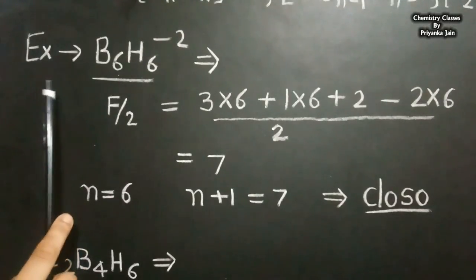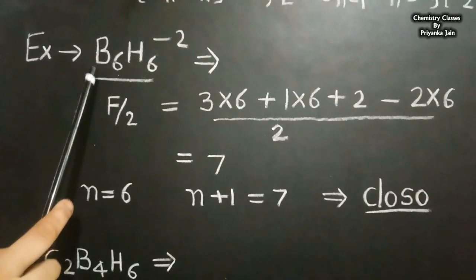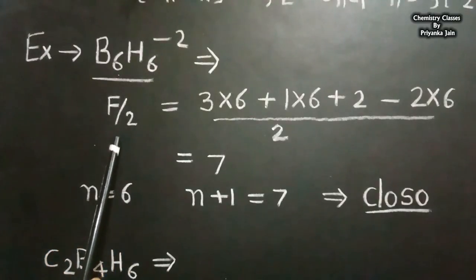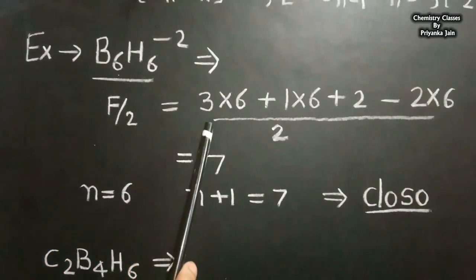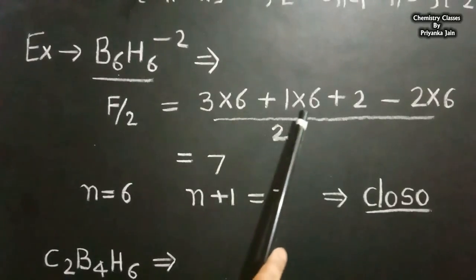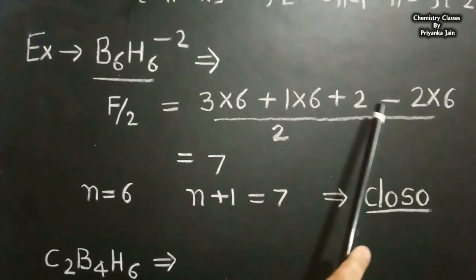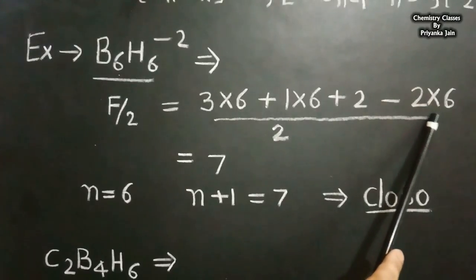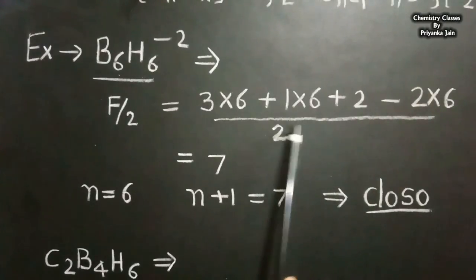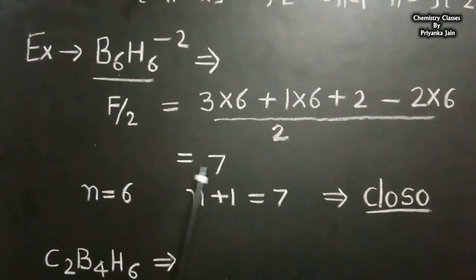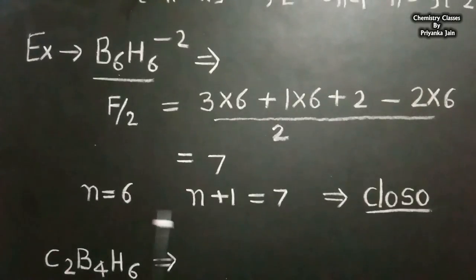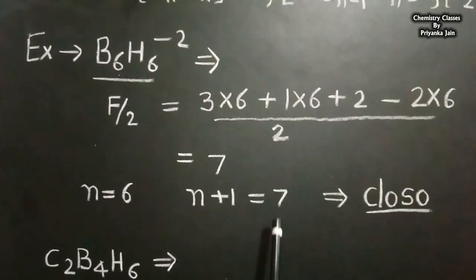For example, to find the framework electrons in B₆H₆²⁻: F/2 = (3×6 + 6×1 + 2 − 2×6) / 2 = (18 + 6 + 2 − 12) / 2 = 14/2 = 7. The number of vertices N is 6, and 7 equals N+1, which corresponds to closo. Therefore, B₆H₆²⁻ has a closo structure.